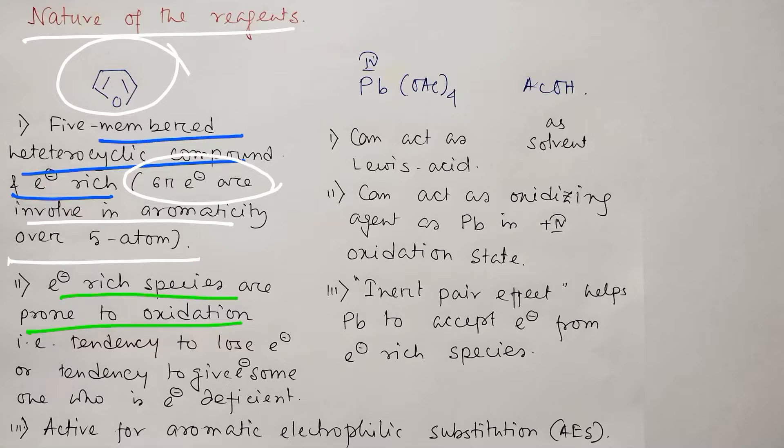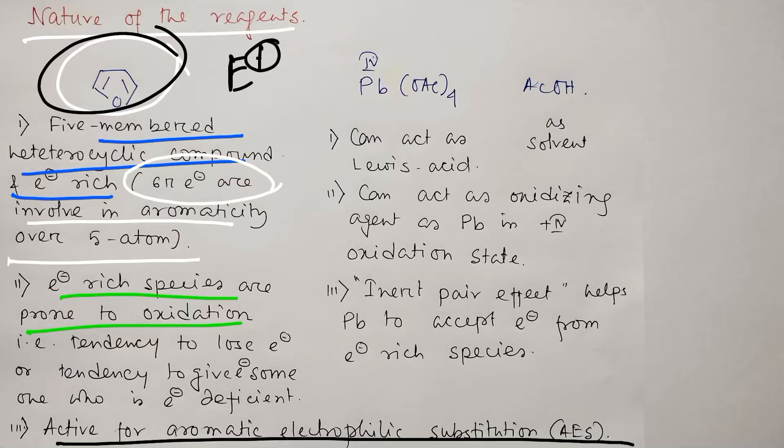And to whom it will donate efficiently? To species which are in deficiency of electron or lack of electron. And because of this pi-excess nature, these compounds are active for aromatic electrophilic substitution also because electrophile is also an electron deficient species.